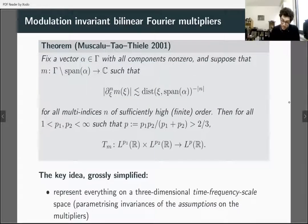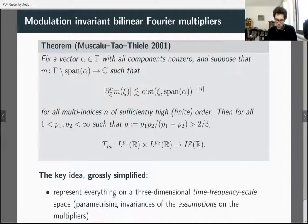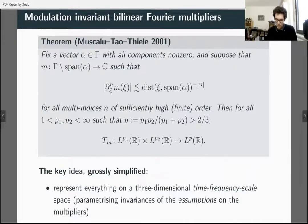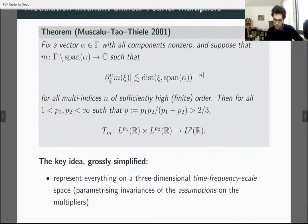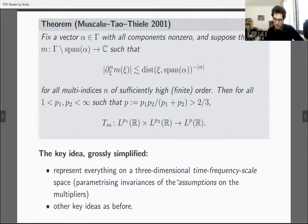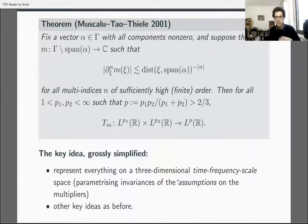How do you prove this? The condition only involves the distance of the frequency to the span of α — the singular line — so the condition is modulation invariant. You still represent everything on your time-frequency-scale space, but now this is parametrizing the invariances of the assumptions, not necessarily of the multiplier itself. You get your trees, do Calderón–Zygmund-type theory on those, put them together cleverly, and you've proven an estimate.